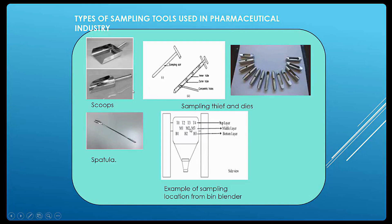Scoops are used to collect a defined quantity of blend from the blender — a defined amount is filled and sent for QC testing. A particular die is used for specific sampling. A minimum of 10 locations is compulsory for collection, as per regulatory requirements. To cover all locations in each container or blender, samples are collected from the top, middle, and bottom to verify content uniformity. A spatula is also used to collect smaller numbers of samples.